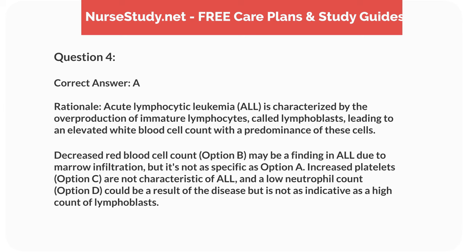Correct answer: a. Rationale: acute lymphocytic leukemia is characterized by the overproduction of immature lymphocytes, called lymphoblasts, leading to an elevated white blood cell count with a predominance of these cells. Decreased red blood cell count, option b, may be a finding in ALL due to marrow infiltration, but it's not as specific as option a. Increased platelets, option c, are not characteristic of ALL, and a low neutrophil count, option d, could be a result of the disease, but is not as indicative as a high count of lymphoblasts.